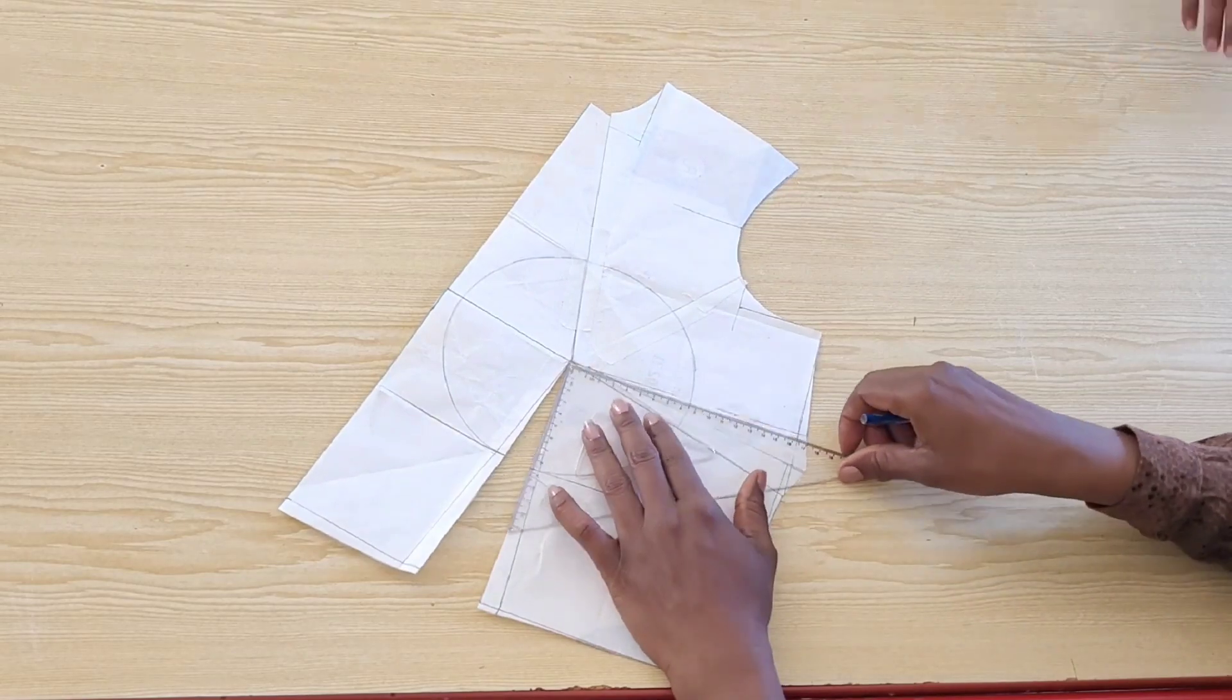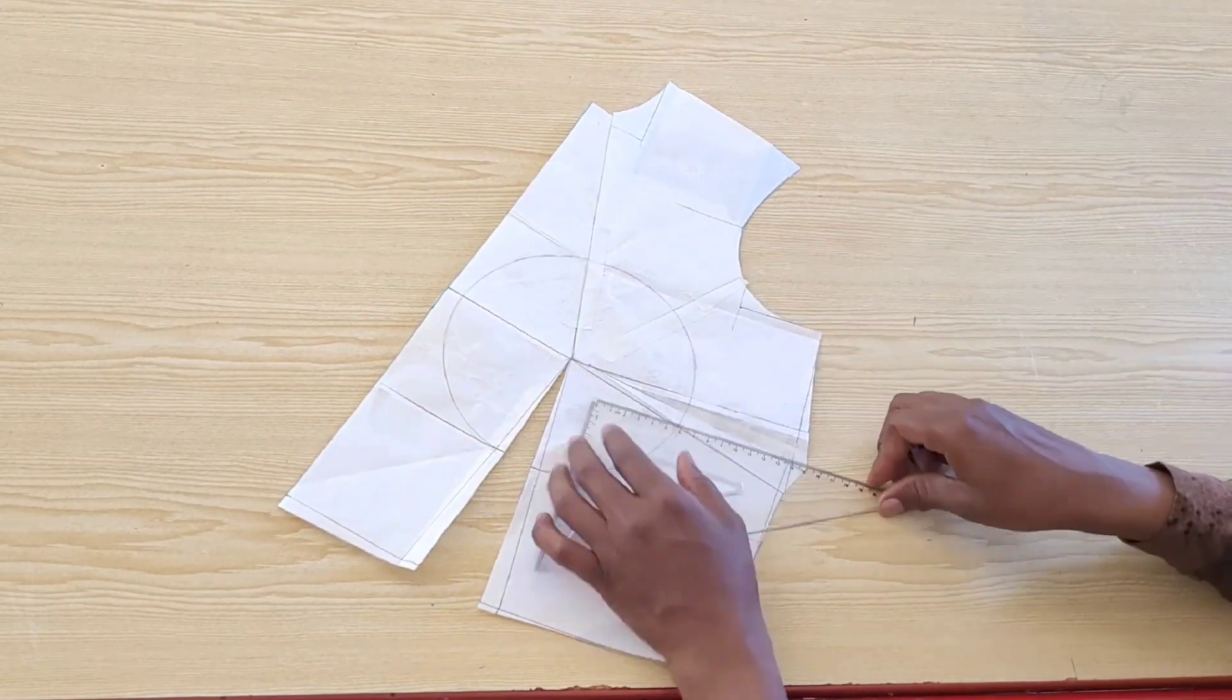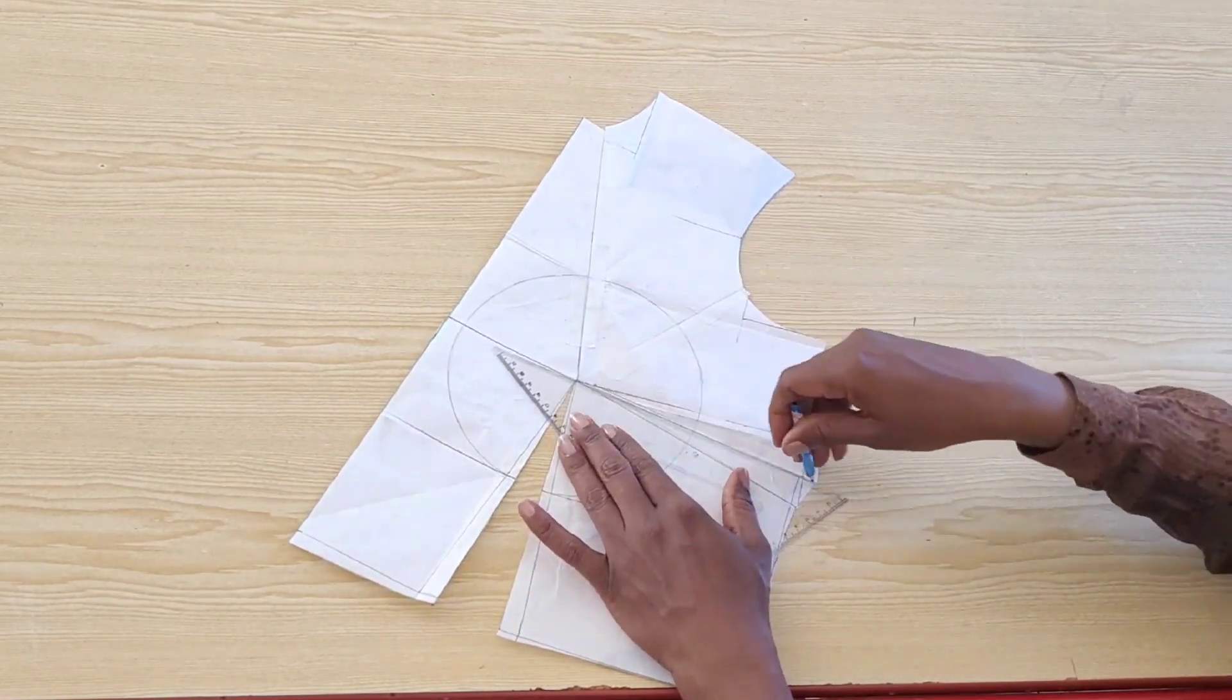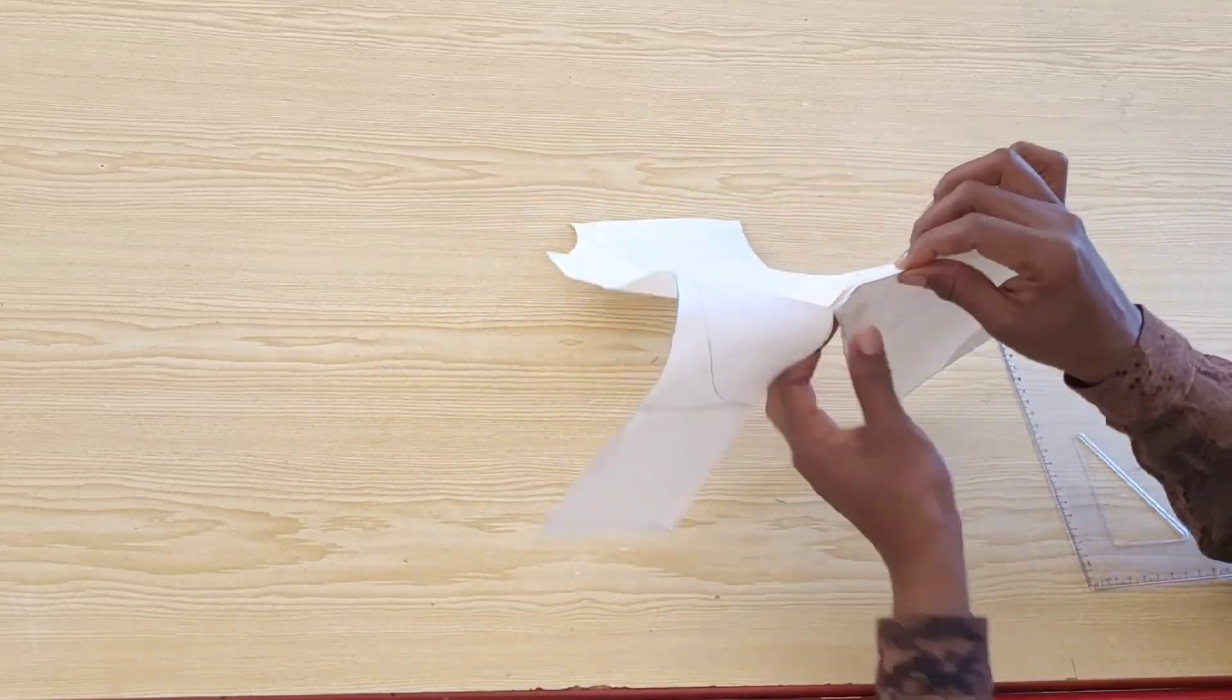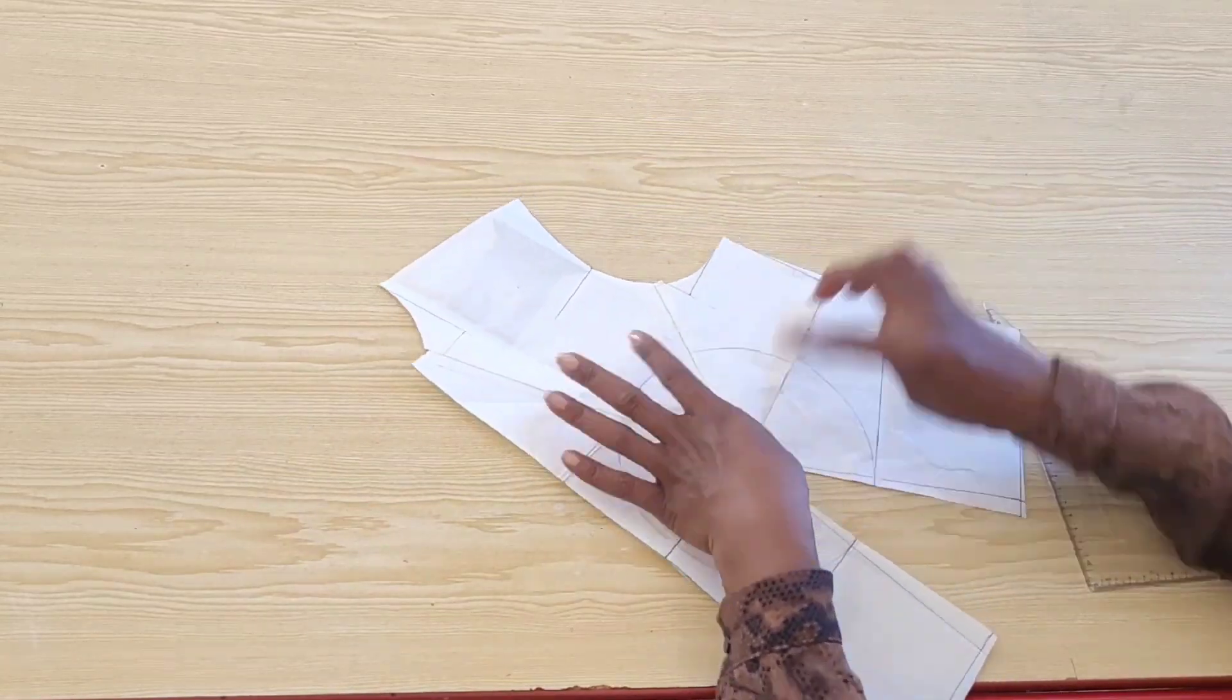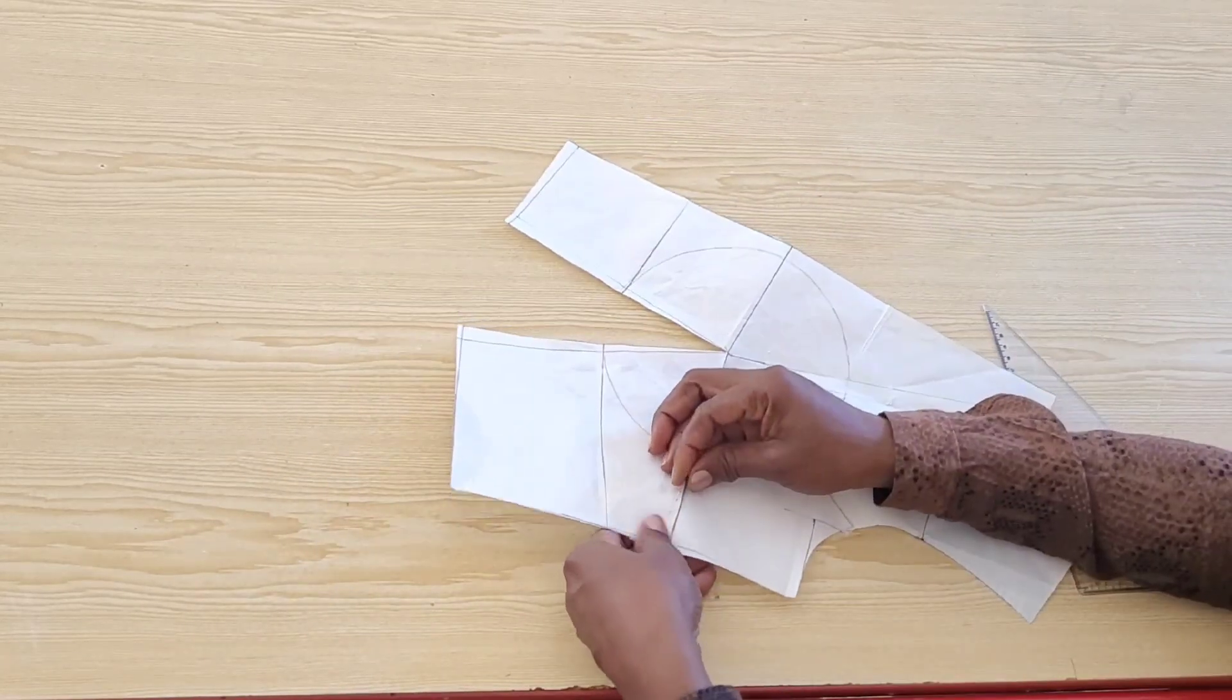So the extra one inch we are going to take in on the bust dart. Instead of the one inch standard bust dart, we are going to do two inches to balance up the side seams of the front and back bodice.